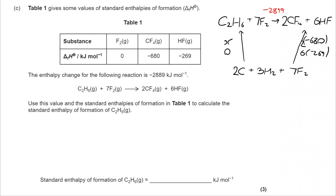On the other side, we've got two CF₄s, so that's two times negative 680. And we've got six HFs, so that's six times negative 269. Remember, enthalpy of formation is the enthalpy change for one mole being formed, so it's multiplied up as the numbers dictate in the equation.